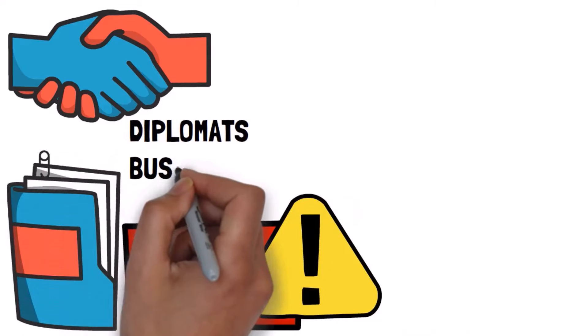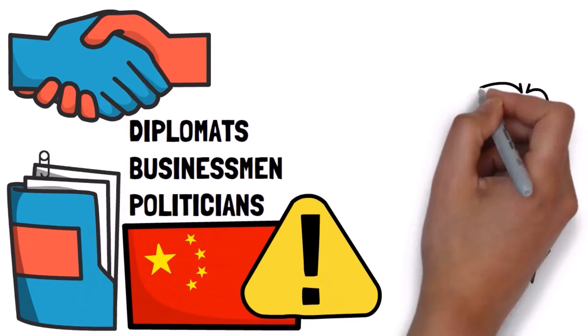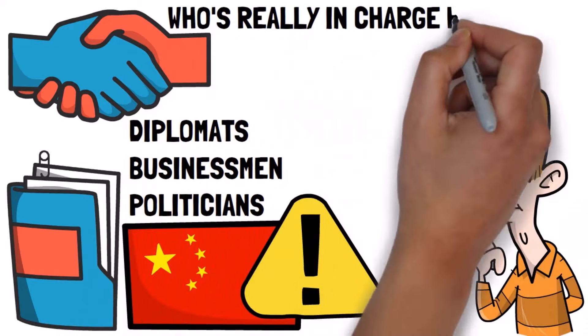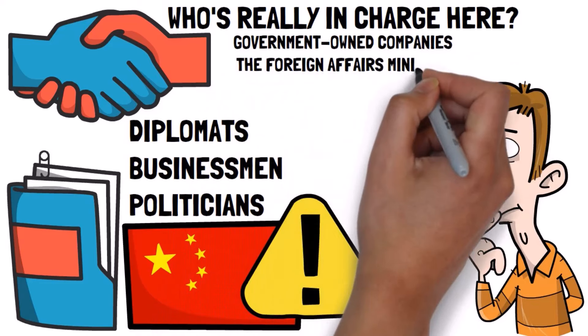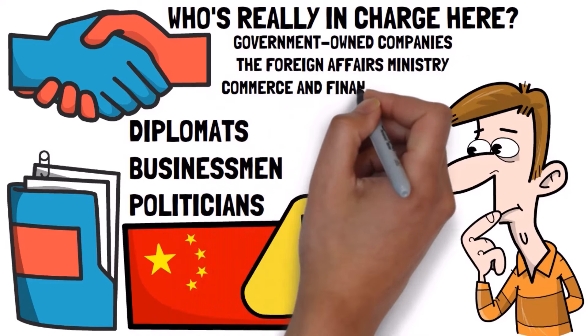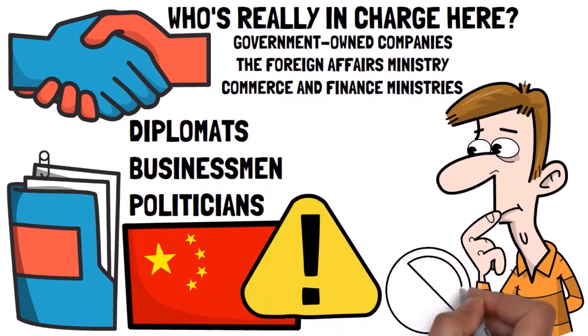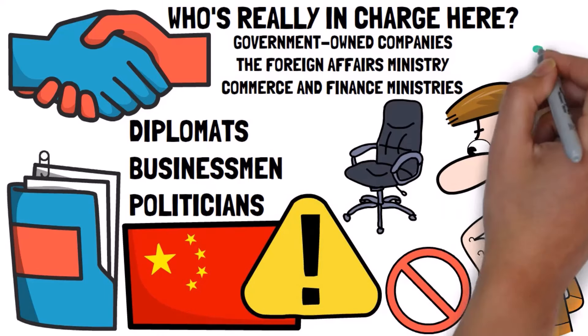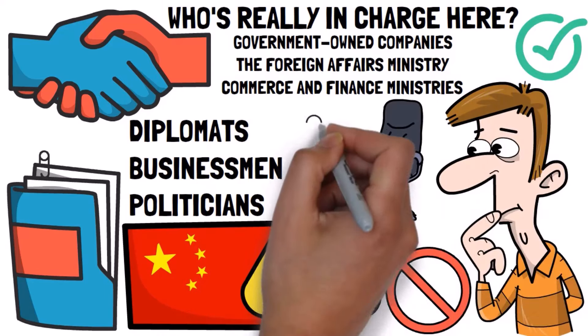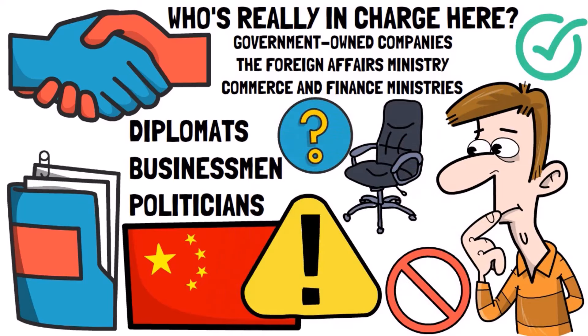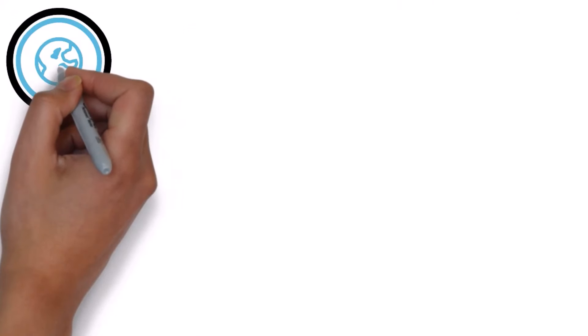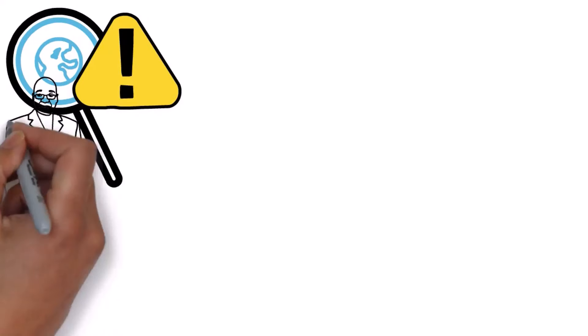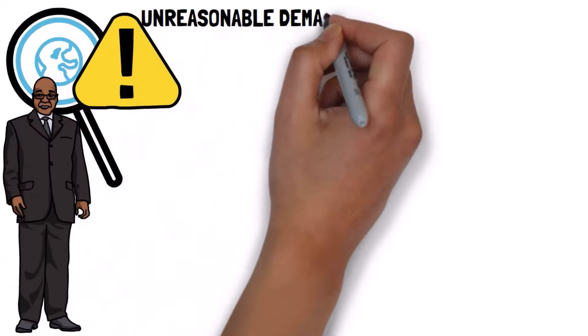Chinese diplomats, businessmen and politicians started wondering, who's really in charge here? Was it the big government-owned companies, the foreign affairs ministry, or maybe the commerce and finance ministries? Nobody was quite sure, and this created a mess with too much bureaucracy. Chinese authorities approved some projects that seemed questionable and ended up not making economic sense. Before they could figure out the first problem, another issue came up. It turns out that the local leaders in many of these developing countries had some pretty unreasonable demands.